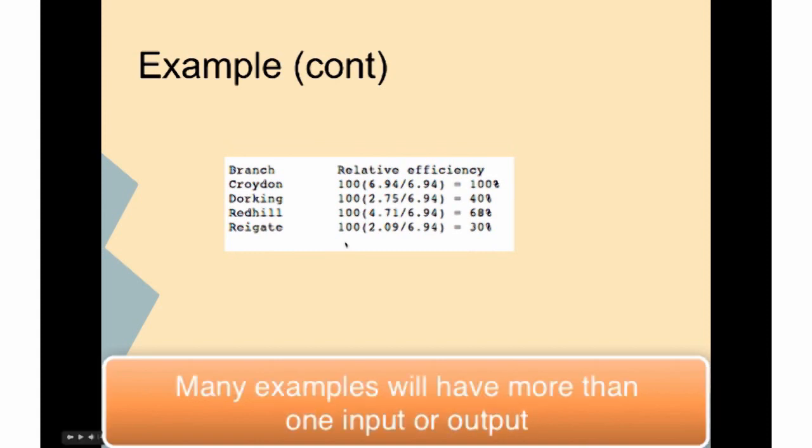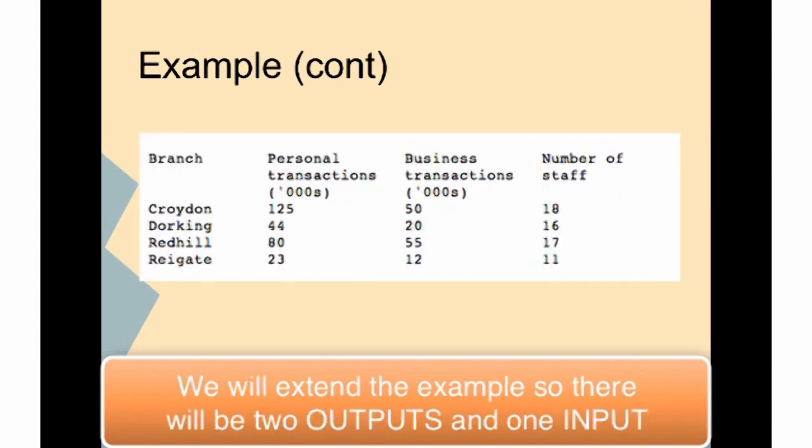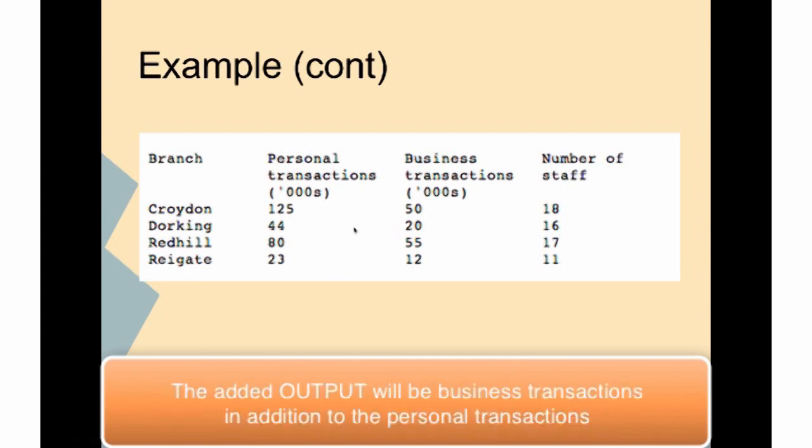However, many examples are going to have more than one input or output. We'll extend the example here, so there will be one input and two outputs. The added output will be business transactions in addition to the personal transactions.